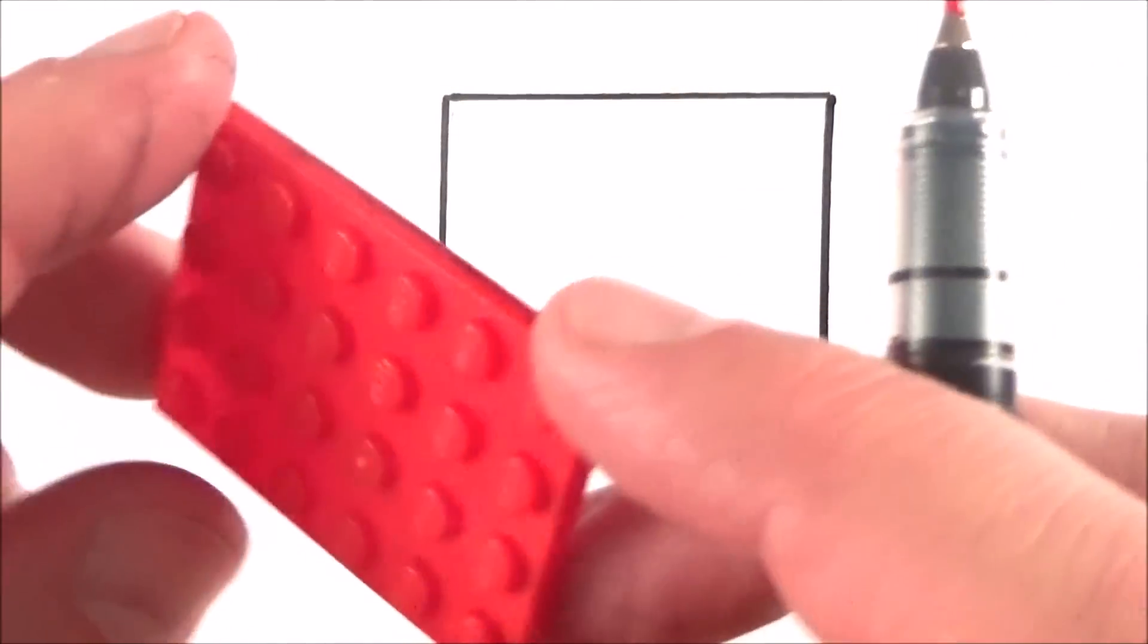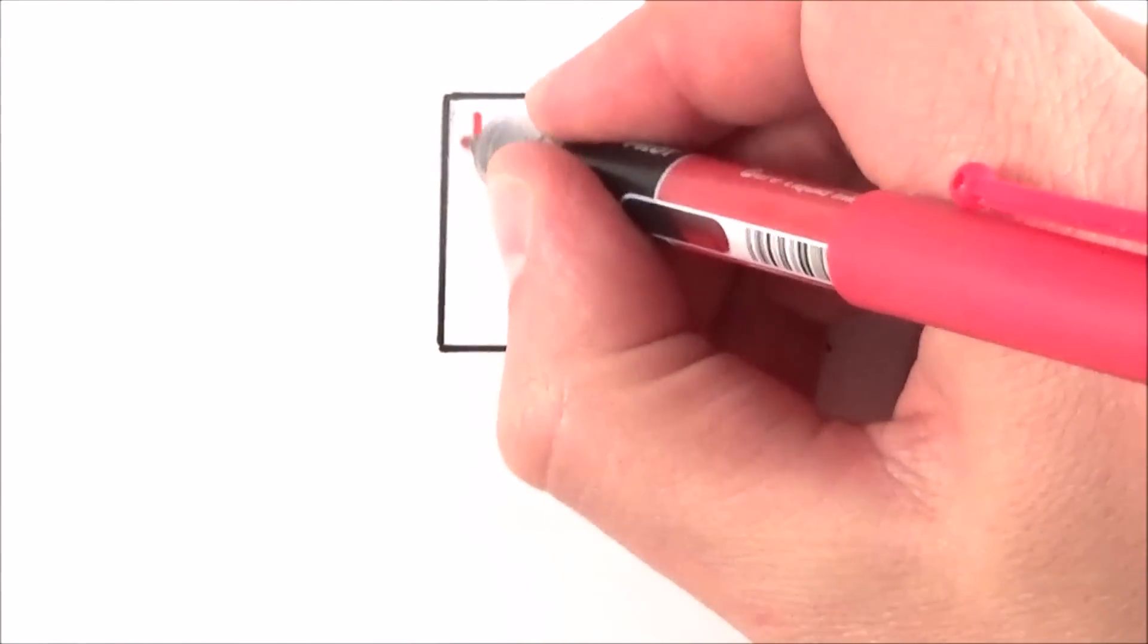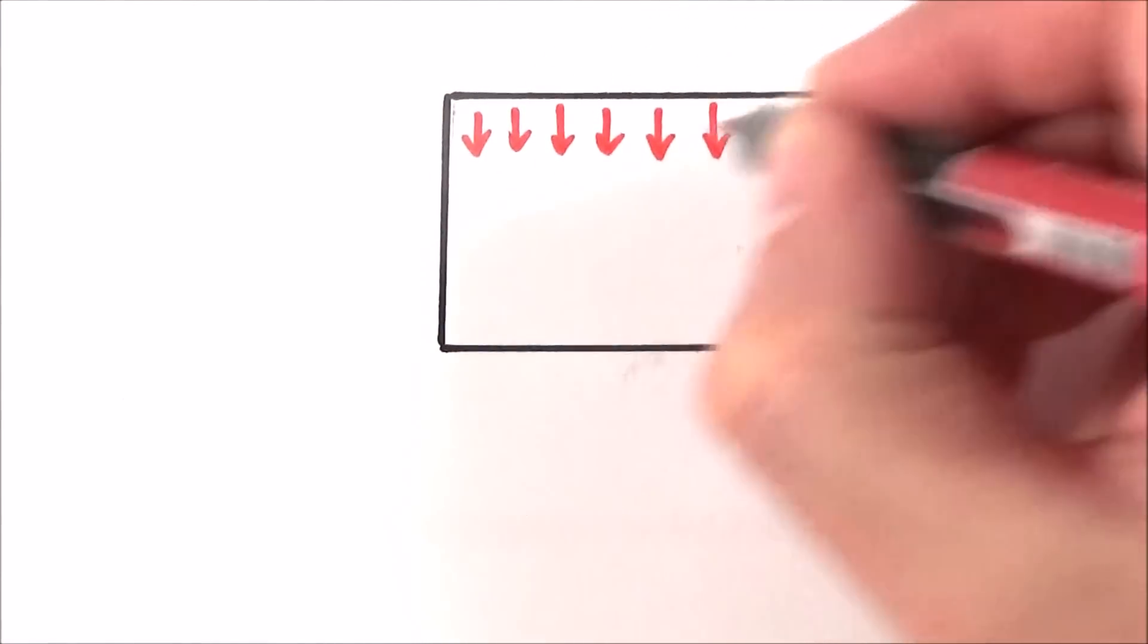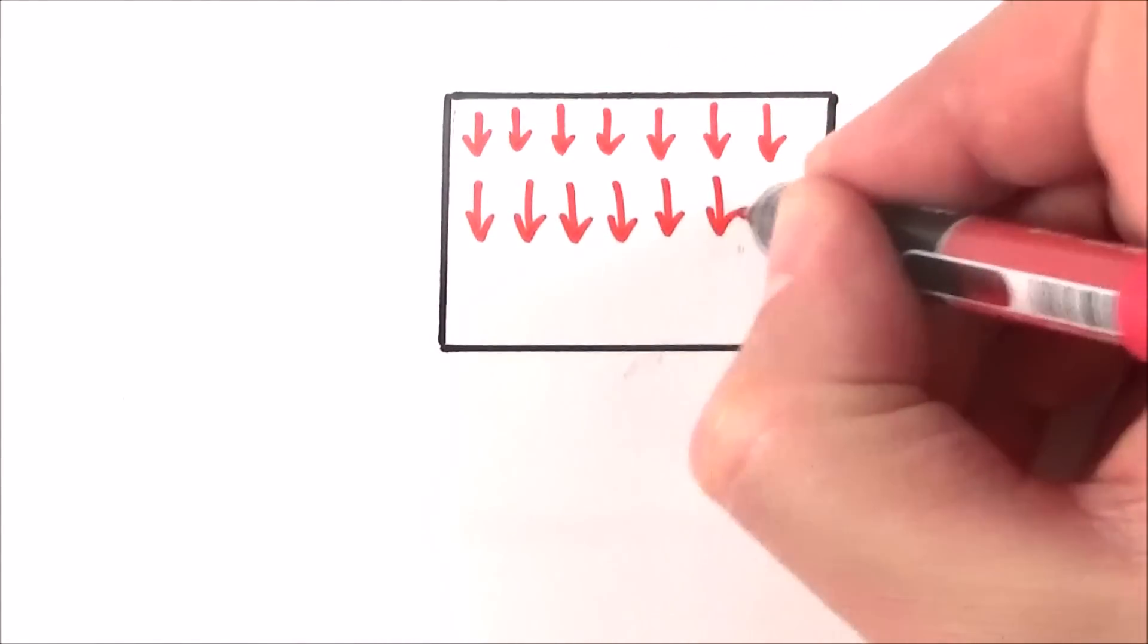When we consider a one-dimensional shape like this rectangle, we can think about all the individual particles inside. They all have their own individual masses and if we think about this in a gravitational field they all have their own individual weights.